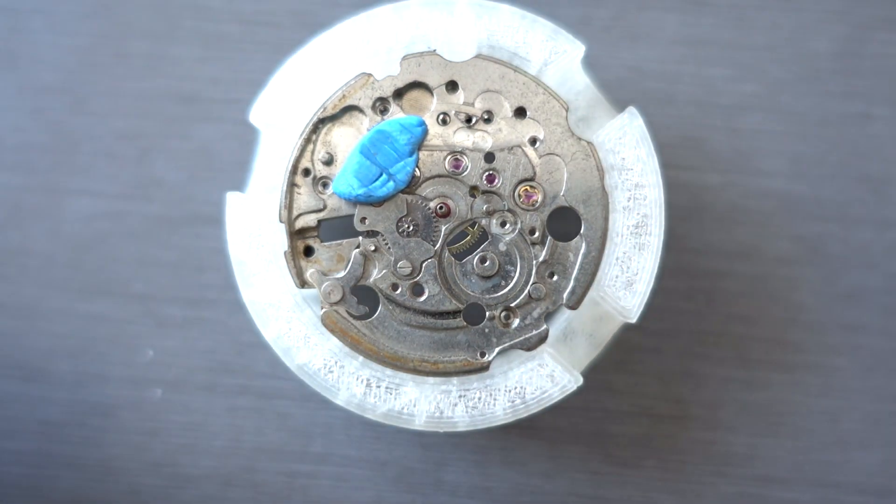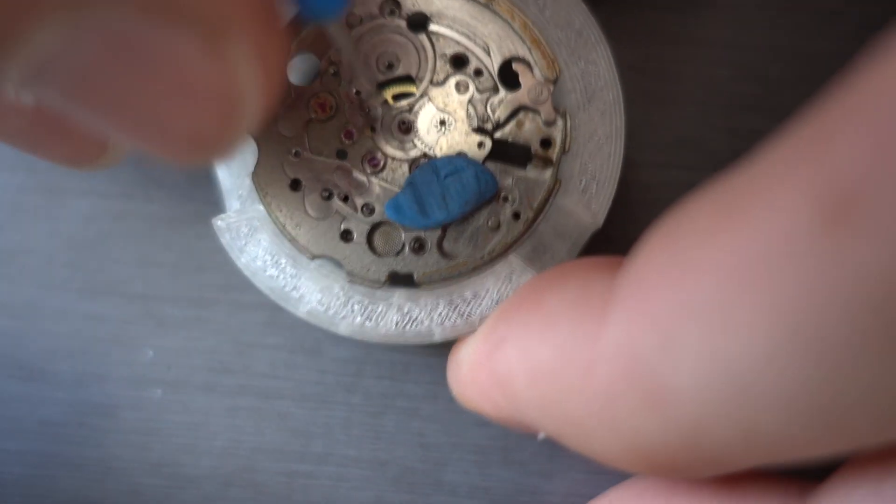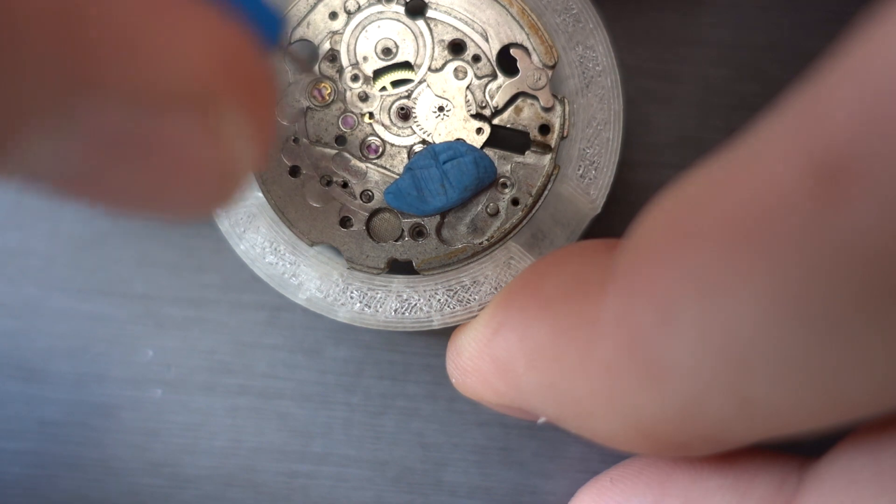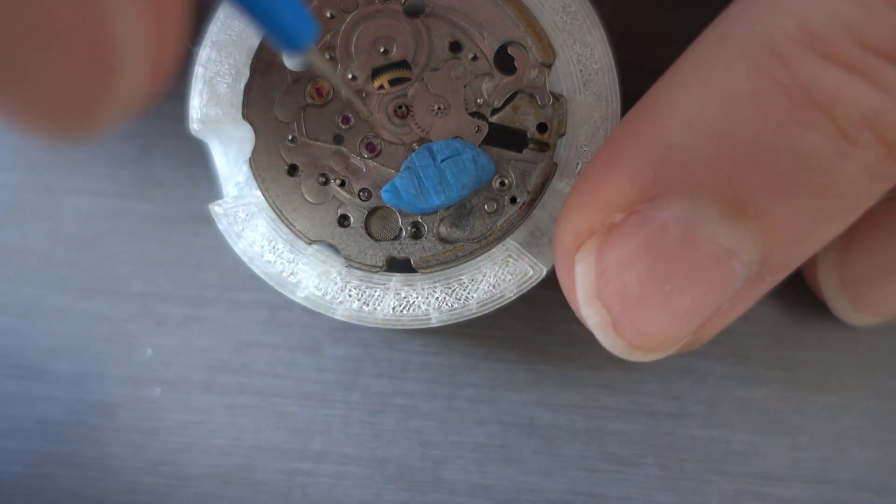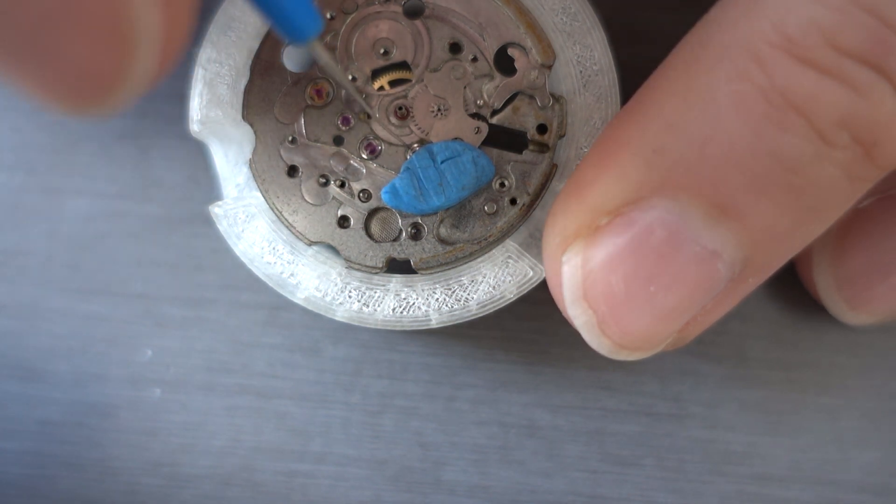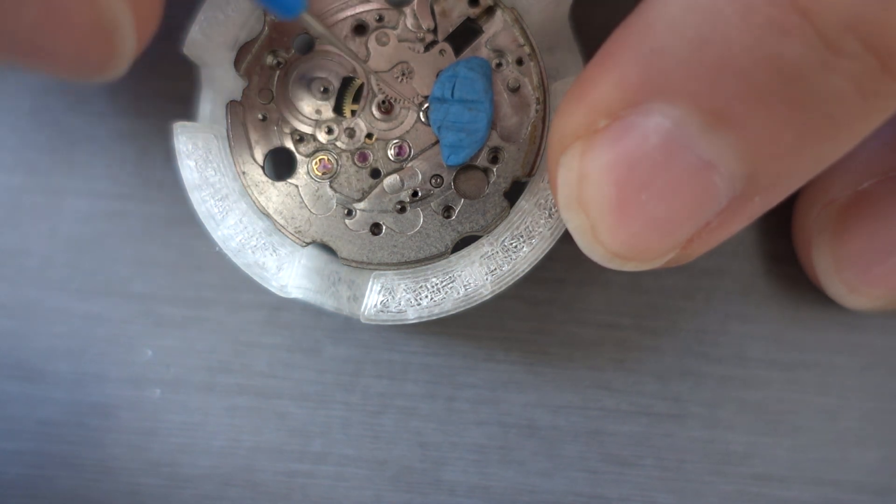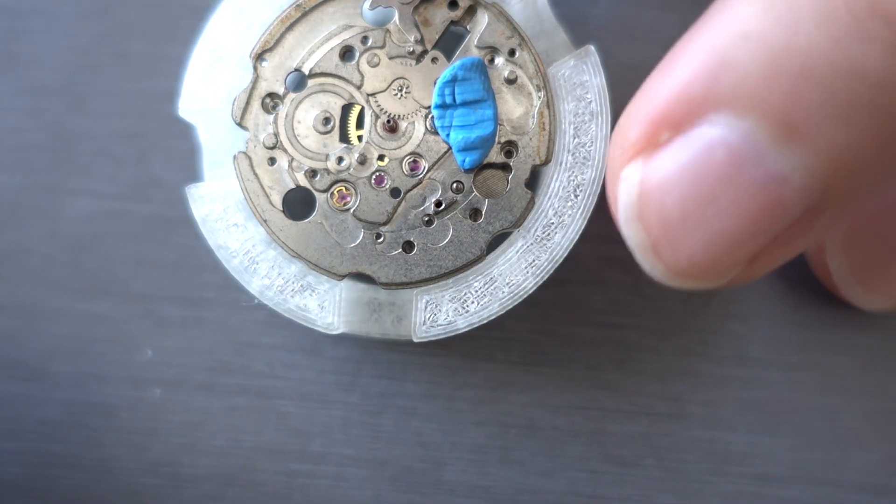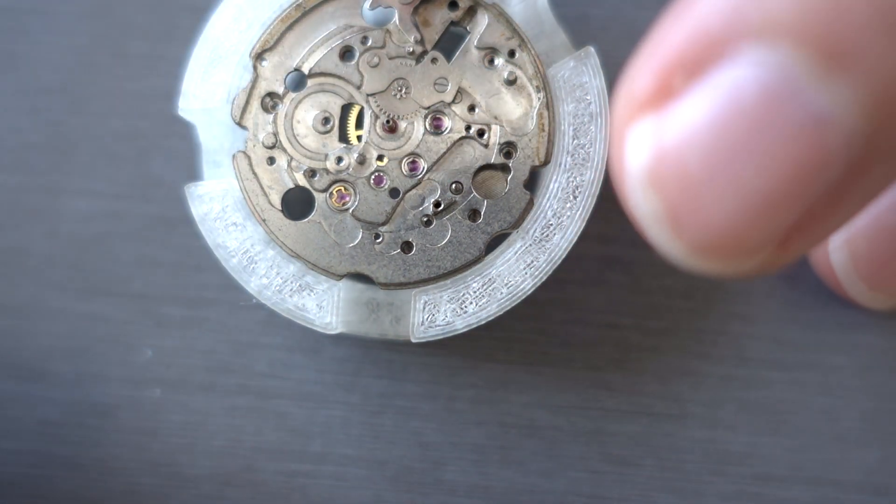So what we're doing here is we're just putting some rodico at the back of the spring. So that's where the legs go into the setting. And I'm just putting in the oiler now and twisting slightly, and that spring has popped out.